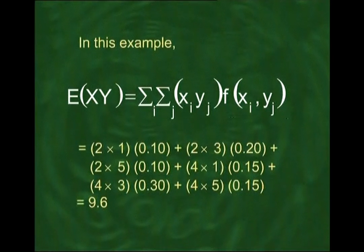Now if X and Y are independent, then E(XY) = E(X)·E(Y). Looking at the right-hand side, E(X)·E(Y) = 3.2 × 3.0 = 9.6. The question is whether E(XY) on the left-hand side also equals 9.6. The formula for E(XY) is ΣΣ xᵢyⱼ·f(xᵢ, yⱼ).